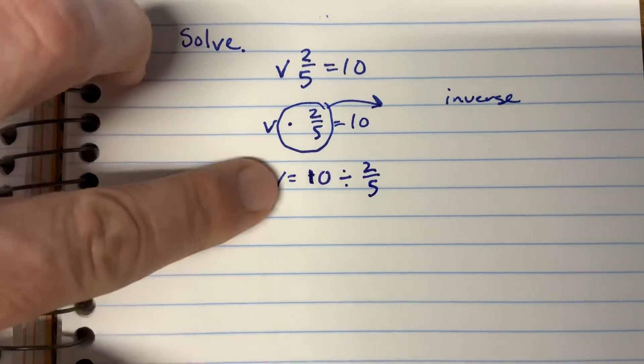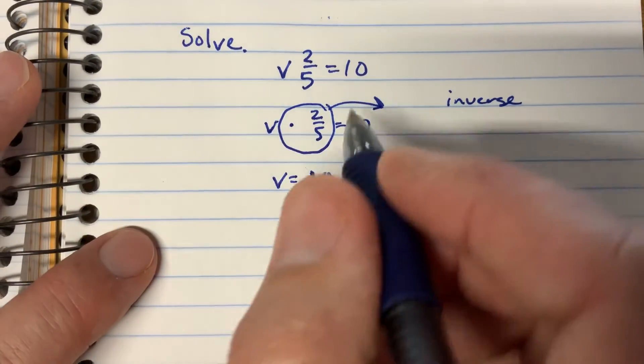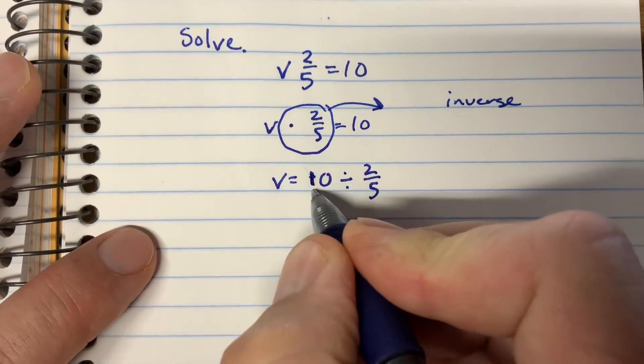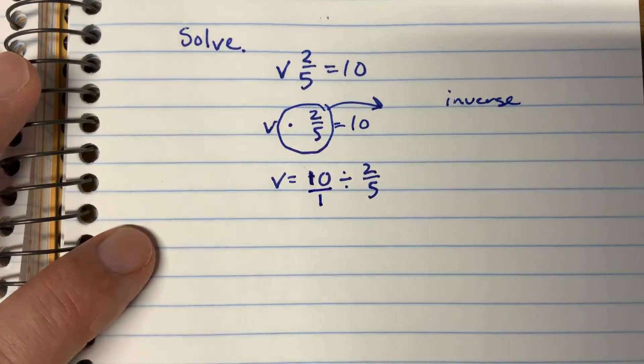And we have a division problem here with fractions. What's our rule about dividing fractions? No whole numbers, so 10 turns into 10 over 1.